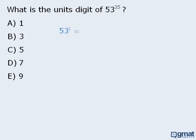To begin, 53 to the power of 1 equals 53, so the unit's digit here is 3. To find the unit's digit of 53 squared, let's go over here. First, 3 times 3 equals 9, so we will place that here. At this point, the remaining calculations are unimportant.